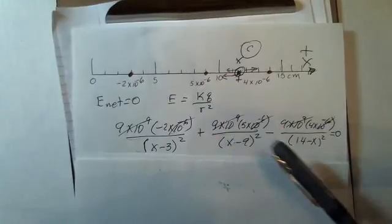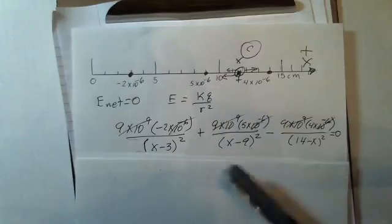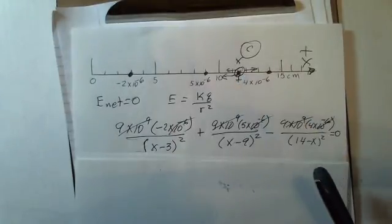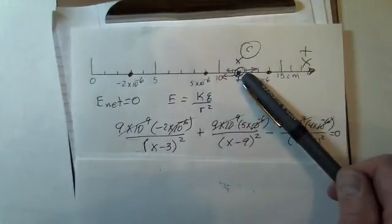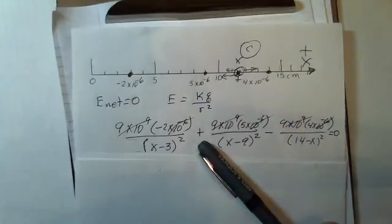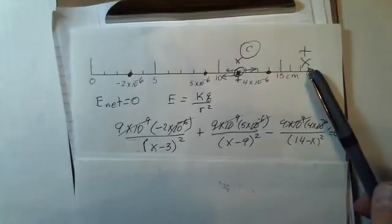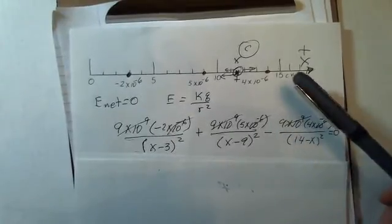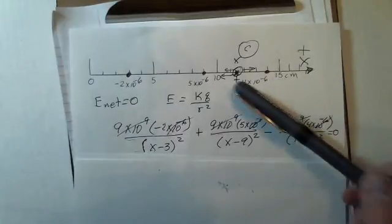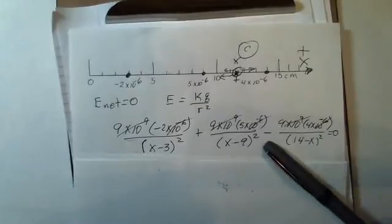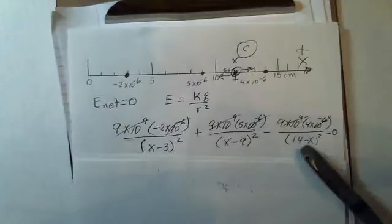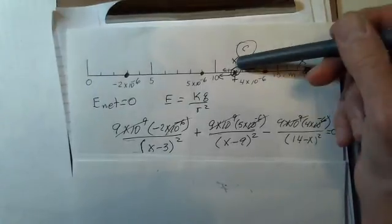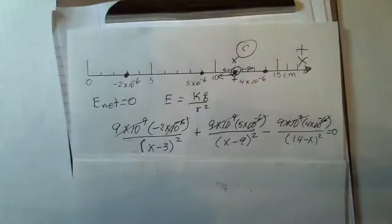What about the 5 charge? K, Q. Now we're at X minus 9 for a distance, and we square that. Is this plus sign correct? Is the electric field at this position X off to the right? Yes. Electric field points away from the positive charge at this position, so I need a plus for this term. What about the 4 charge? 9 times 10 to the 9th, 4 times 10 to the minus 6. We're at 14 for where the charge is minus X, squared. I do need a negative for this term because the electric field created by this positive charge points to the left at my position X.